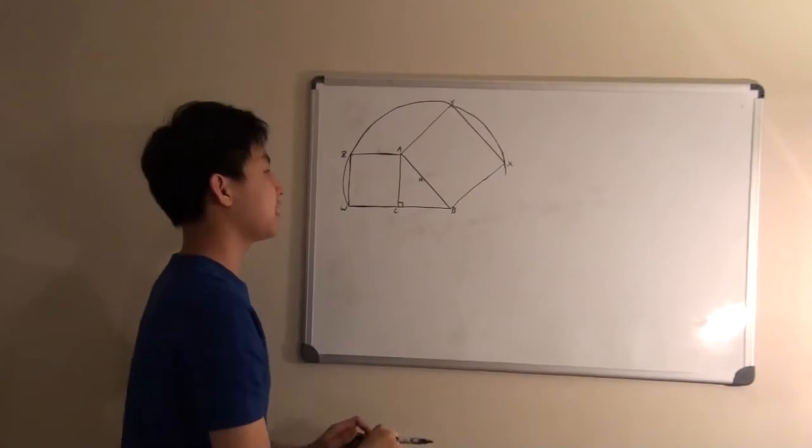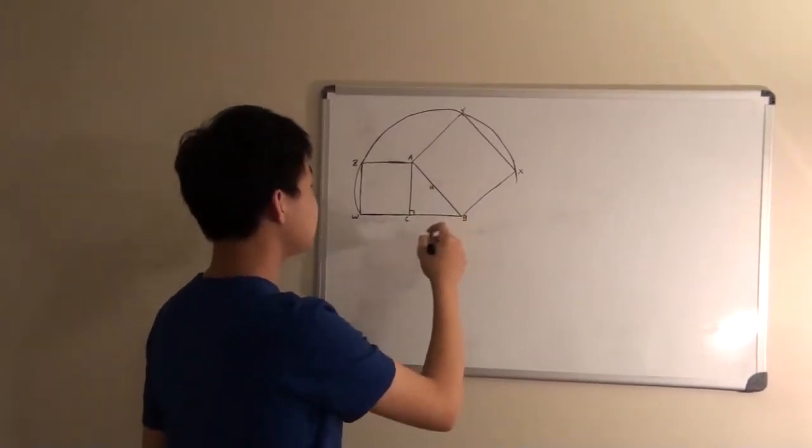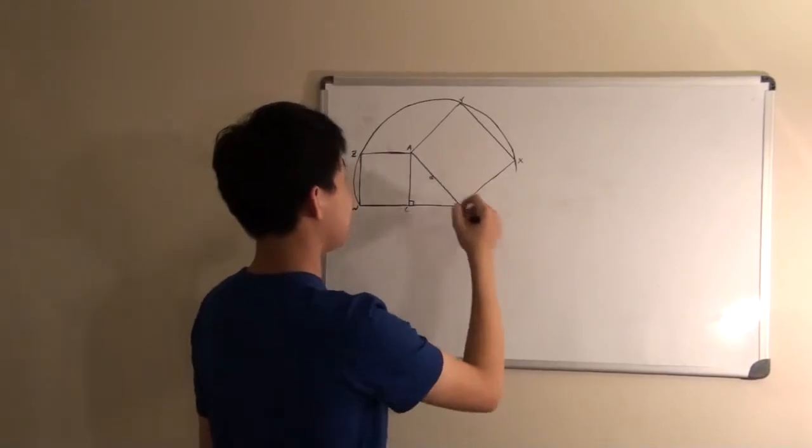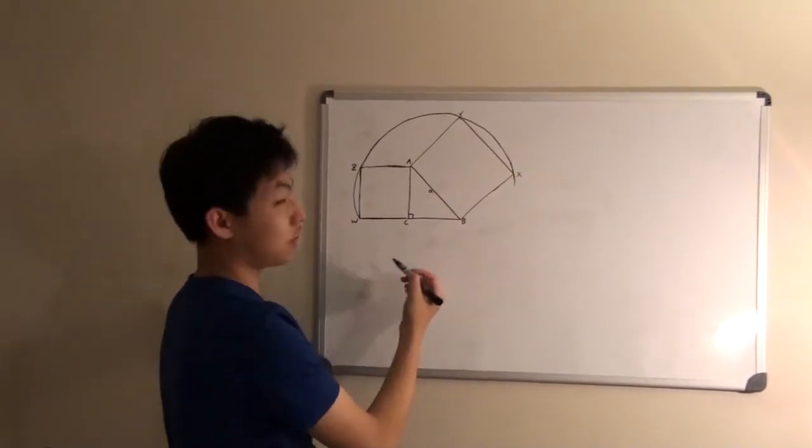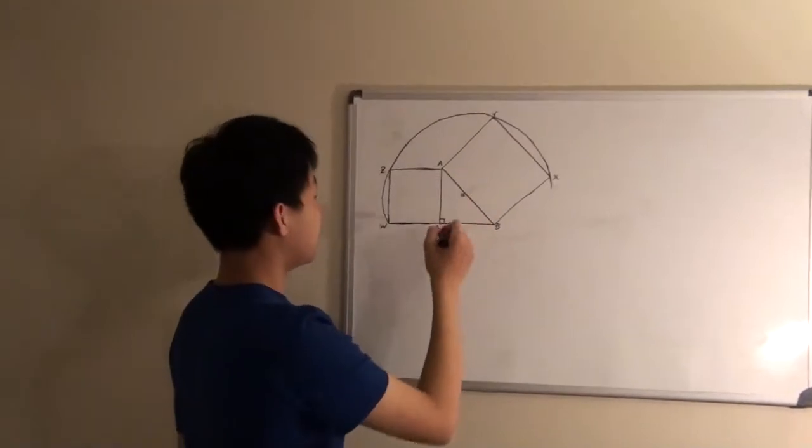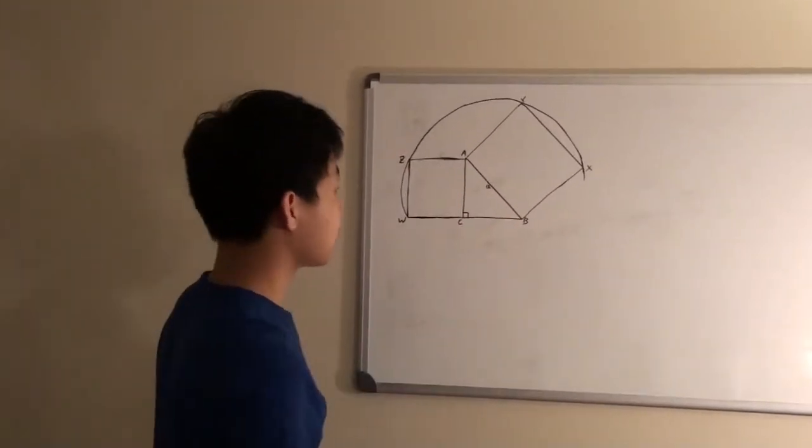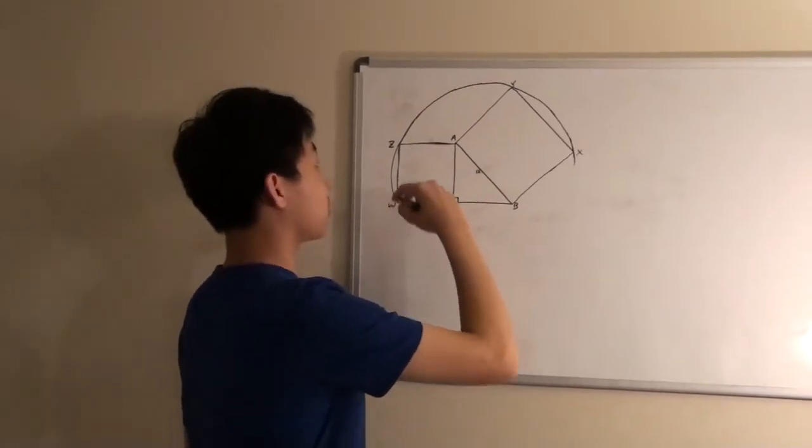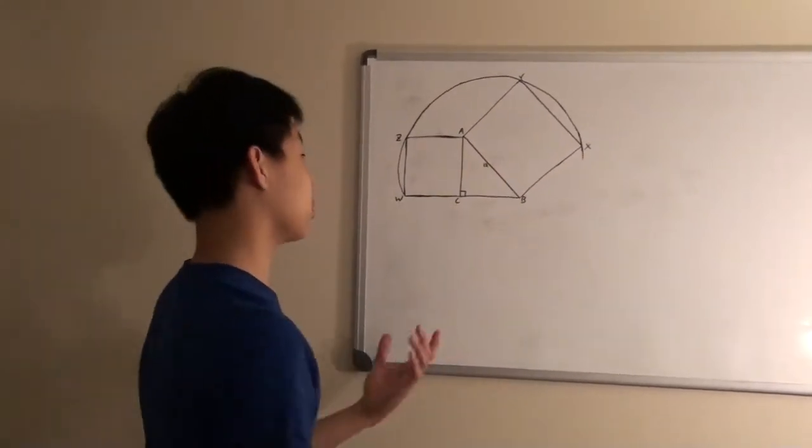Okay, from the problem, we are given that right triangle ABC has a square extended from its hypotenuse, which is ABXY, and a square extended from one of its legs, which is ACWZ. And the corners of the squares are touching a tangent on a big circle.